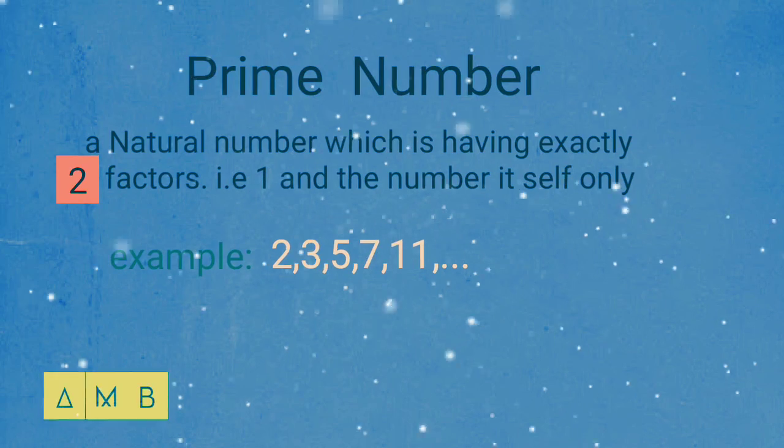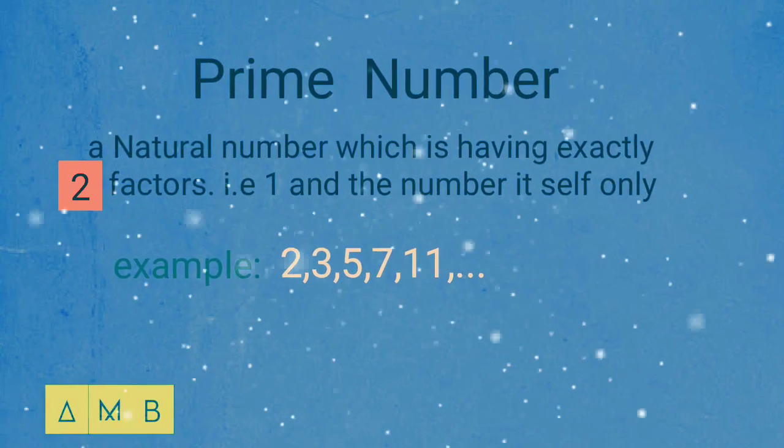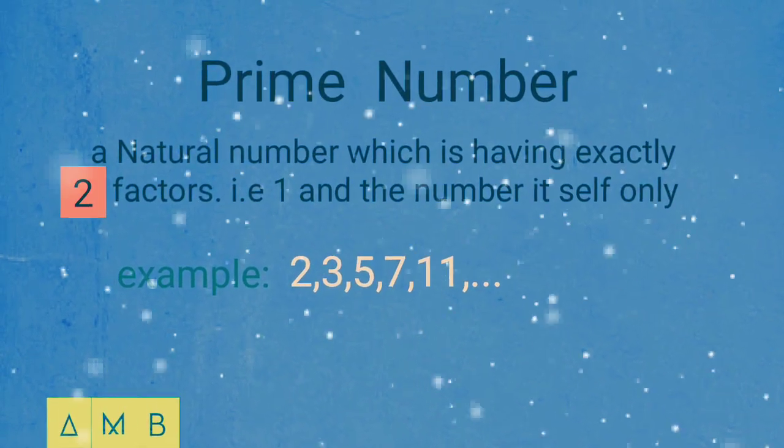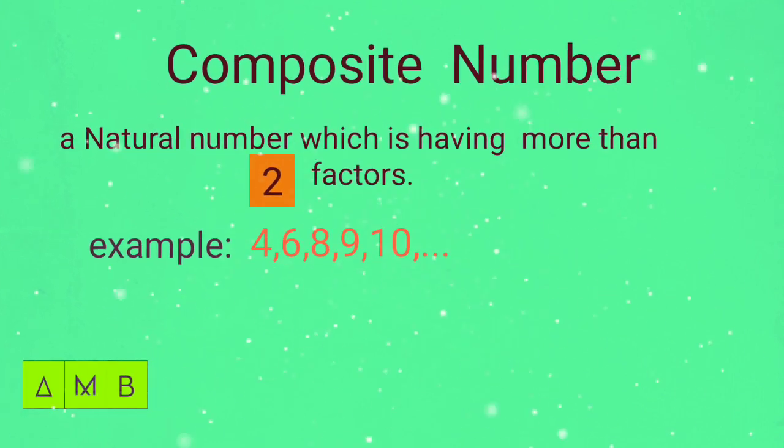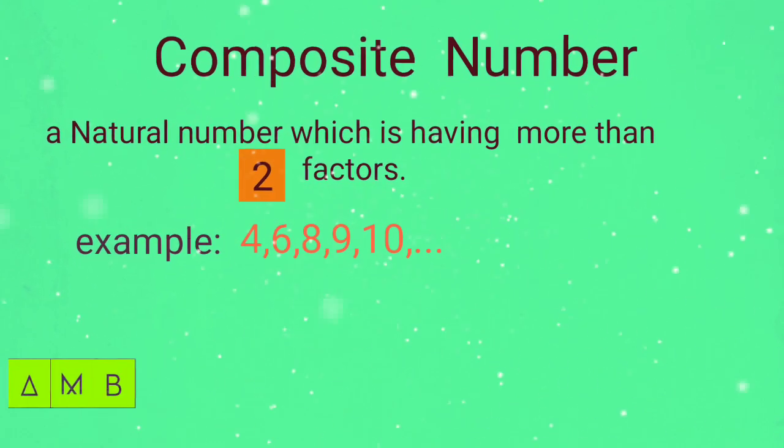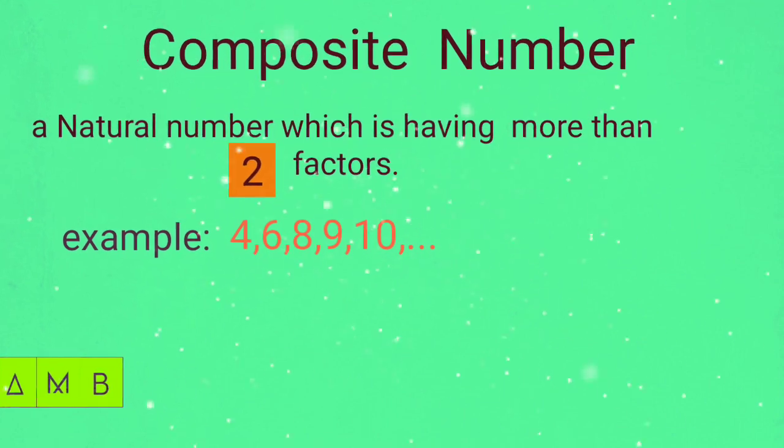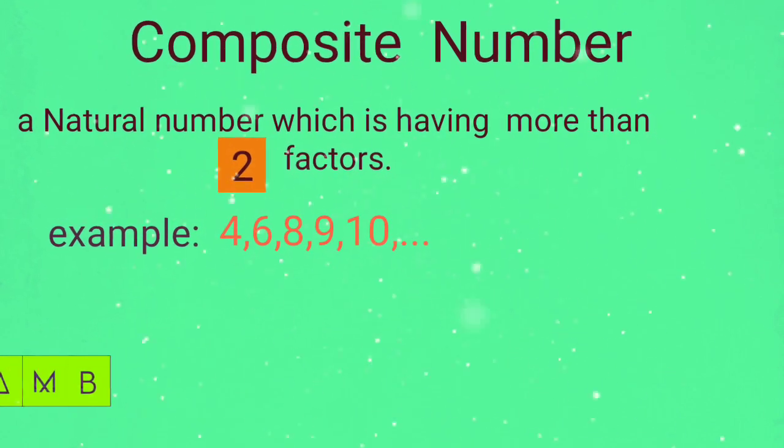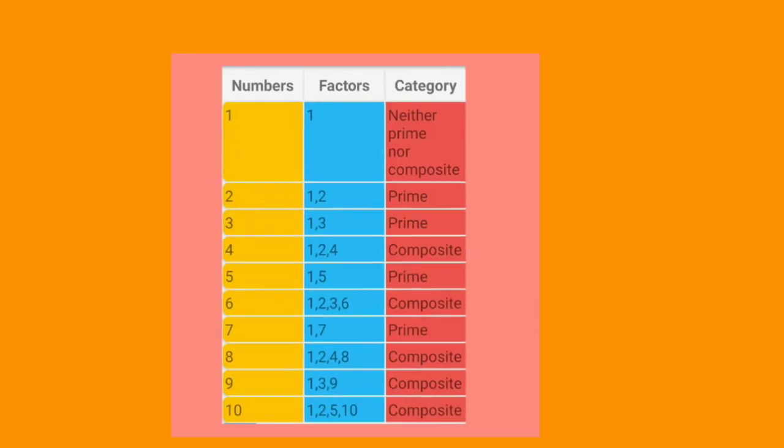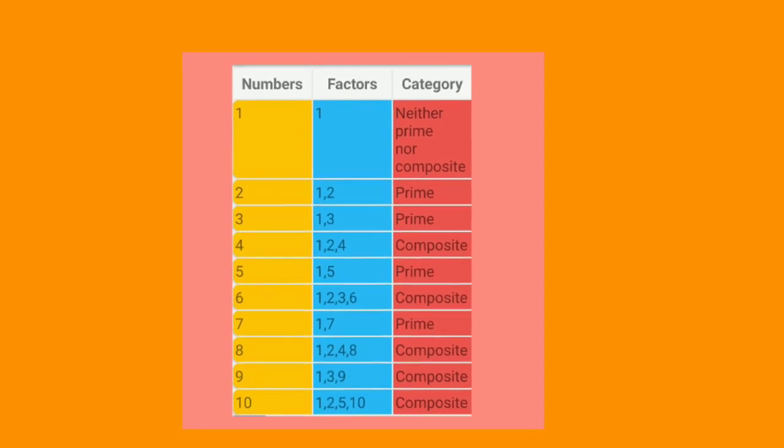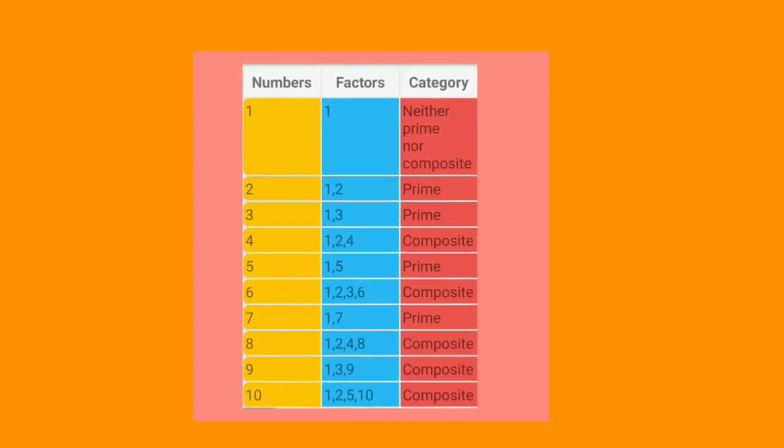Examples: 2, 3, 5, 7, 11, and so on. Composite number is a natural number which is having more than two factors. Examples: 4, 6, 8, 9, and so on. Here the factors of 1 is only 1.